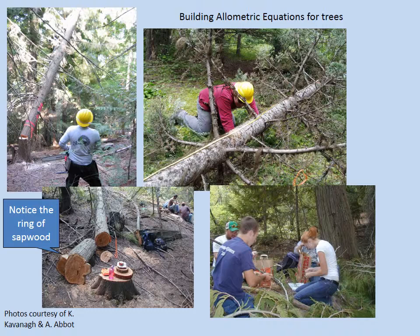We can also use allometry to determine the amount of foliage in the canopy, which tells us about the forest's ability to convert sunlight into biomass. There is strong allometry between live foliage and the sapwood area that is required to maintain the hydraulic connection between roots and leaves. Sapwood area can be measured by cutting the stem and measuring the area of the sapwood, or by taking a tree core at breast height and using a little geometry to determine the sapwood area.